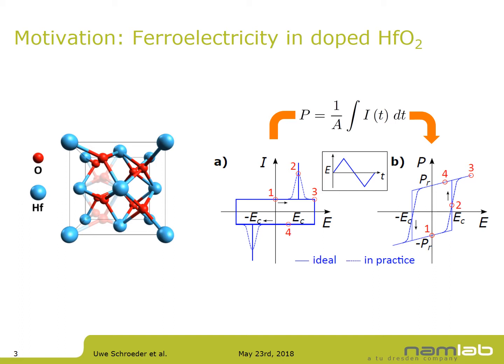Taking a closer look into the structure: looking at the hafnium oxide, you see four oxygen atoms within the hafnium oxide lattice. The lighter and darker red ones represent the two different polarization orientations of the material for the two polarization states.